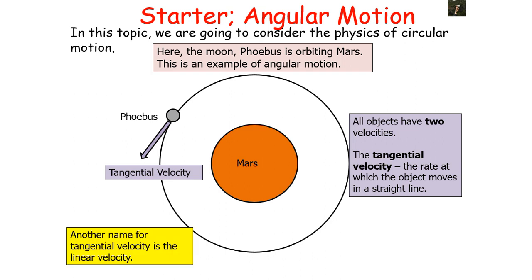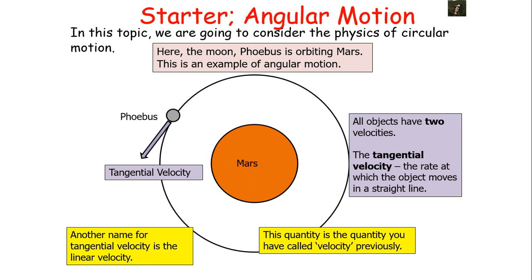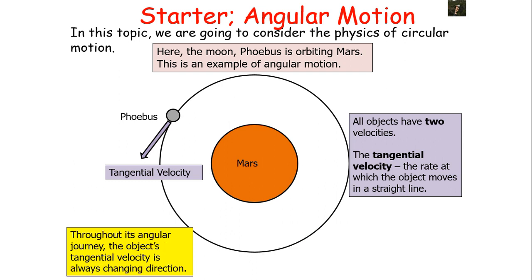Another name for tangential velocity is linear velocity, which is the quantity previously just called velocity. Throughout its angular journey, the object's tangential velocity is always changing direction, because the direction of tangential velocity is the direction in which the object would move if that force causing angular motion were removed — which is at a tangent to its current path. As it moves in a circle, the tangential velocity is always changing direction because the tangent points in different directions at different parts of the orbit.